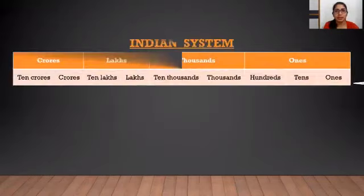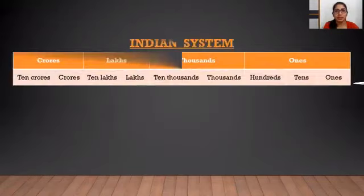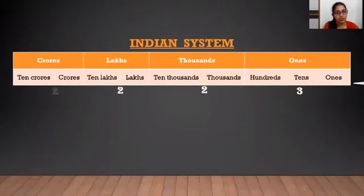As we know, in the Indian Place Value System, we divide the digits in the groups of 3, 2, 2 and 2 starting from the right side. And accordingly we put commas in between the number.